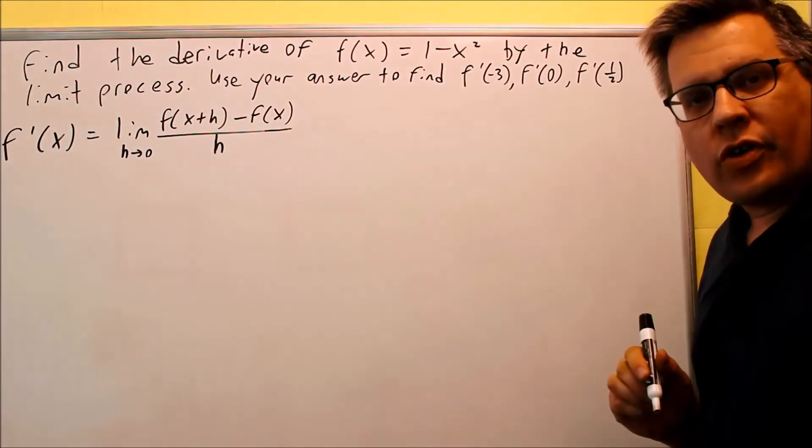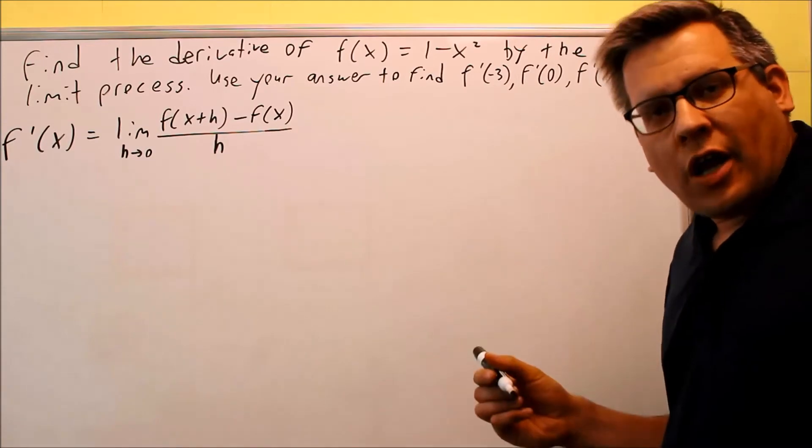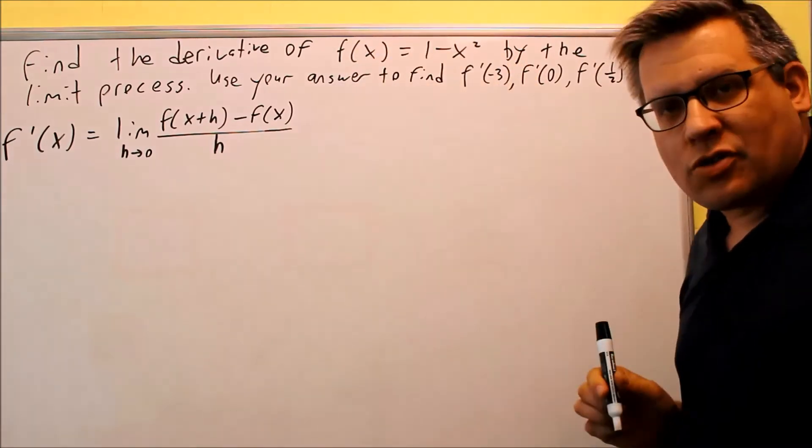So what a derivative is, it's an expression for the slope, so we can find the slope at any particular x value on a certain curve we're looking at. In this case, we're looking at 1 minus x squared.